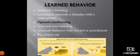Now we study the types of learned behavior: operant conditioning, habituation, and classical conditioning. Learned behavior is associative — learning to associate a stimulus with a consequence. Operant conditioning is a trial-and-error learning that associates behavior with reward or punishment. An example includes learning what to eat.